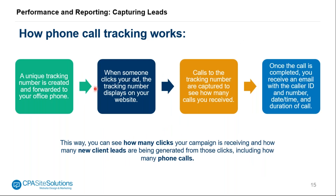Here's how call tracking works: a unique number is created and then forwarded to your own office phone number. When someone clicks on your ad and the tracking number displays on your website, they can call that number. Once they call, the tracking number triggers that conversion. You can see from how many calls come through how successful your ad was. If a specific ad is creating more calls, you know that ad is successful. If calls aren't coming through an ad, you may want to reconsider changing the ad. Once the call is completed, you can receive an email with caller ID, number, date, and time so you can follow up and convert them into a client.